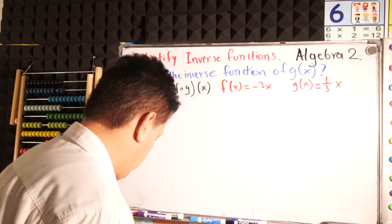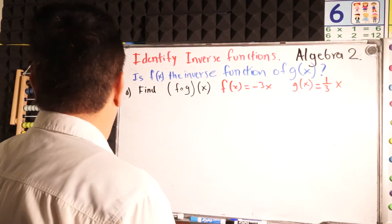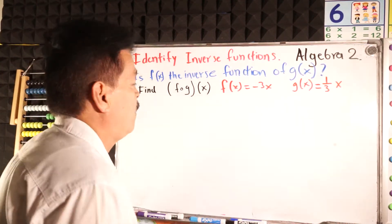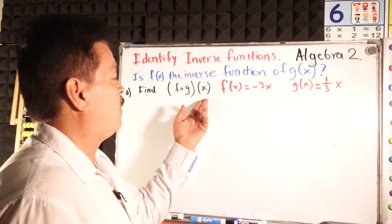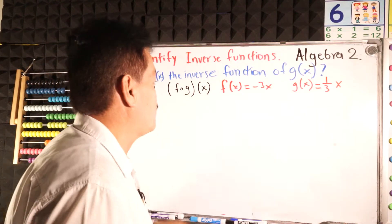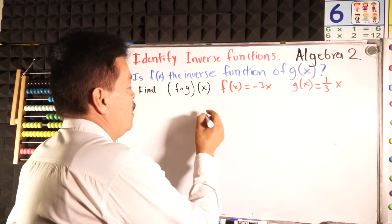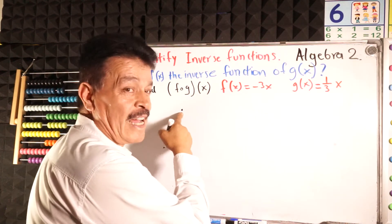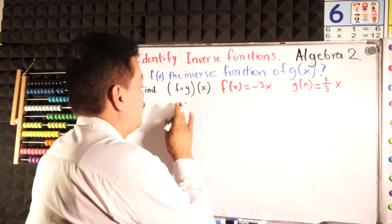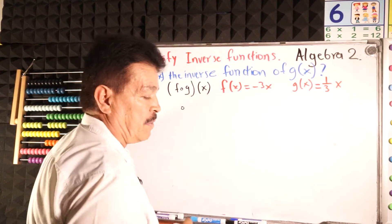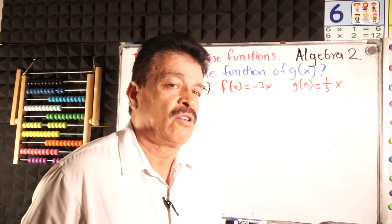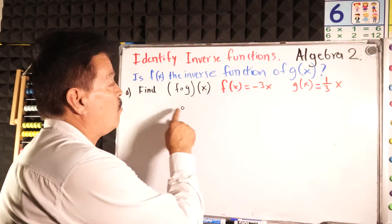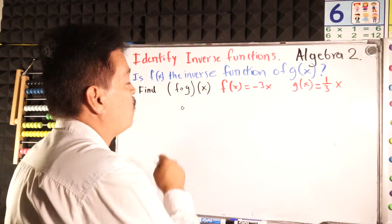Our problem is to find f composed with g of x. This is not times. When you see the circle, it's an open circle. When it's a closed circle, it means times. When it's an open circle in between two variables or two functions, this means composed functions. We are talking about composed functions.